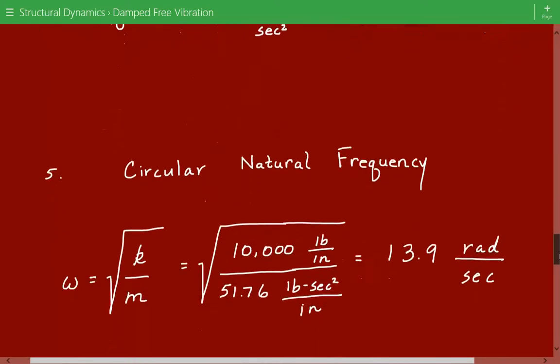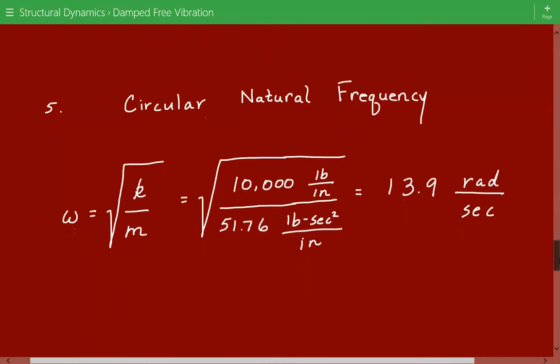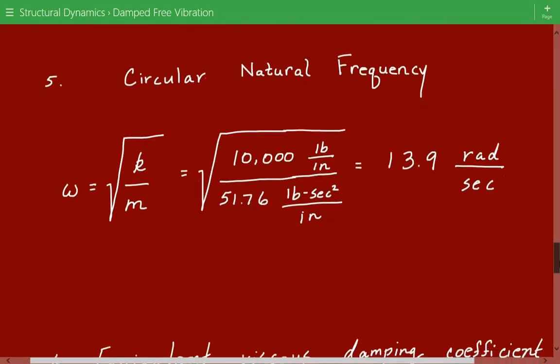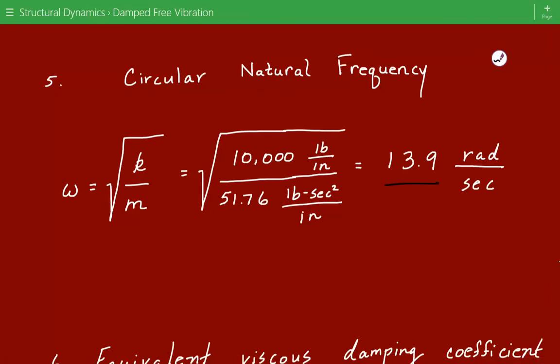Then we can calculate the circular natural frequency, and that's equal to the square root of the stiffness divided by the mass. So that's equal to 13.9 radians per second.